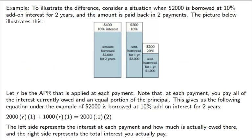Let's consider an APR for a simple situation. Suppose we have $2,000 borrowed at 10% add-on interest for two years, paid back in two payments. The interest would be $400 — that's $2,000 times 10% times 2. So with add-on interest, we take the $2,400 total owed divided by two payments, giving us $1,200 per payment.